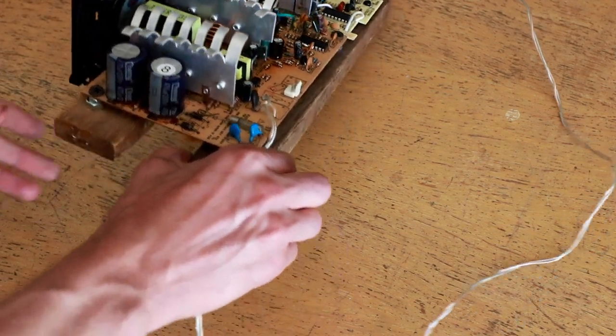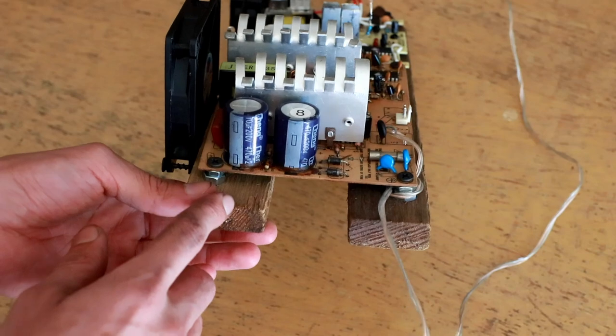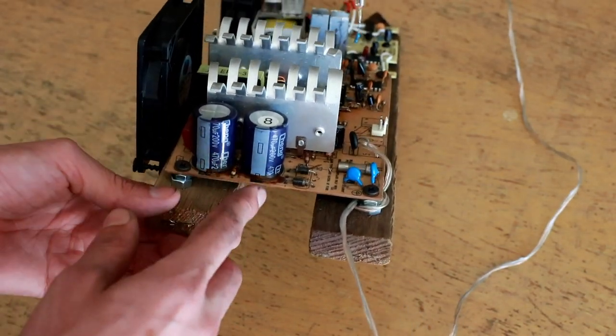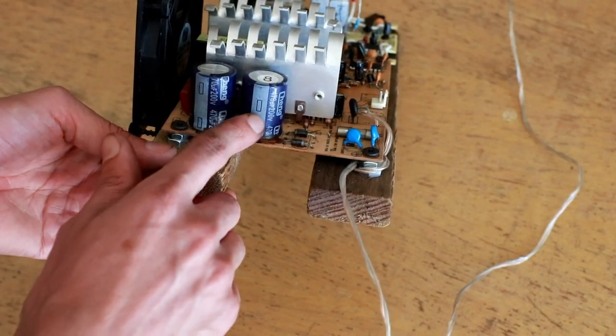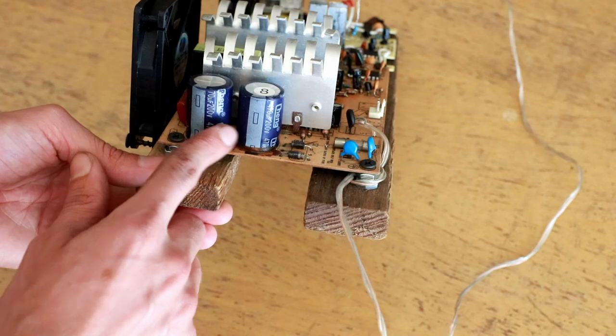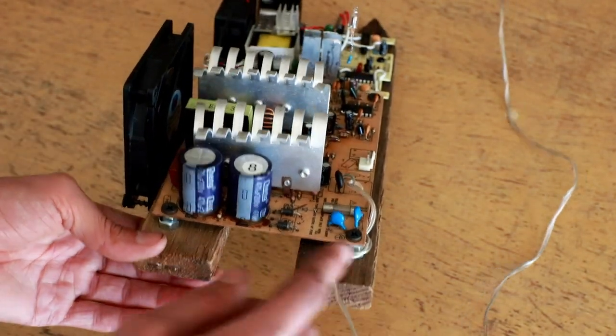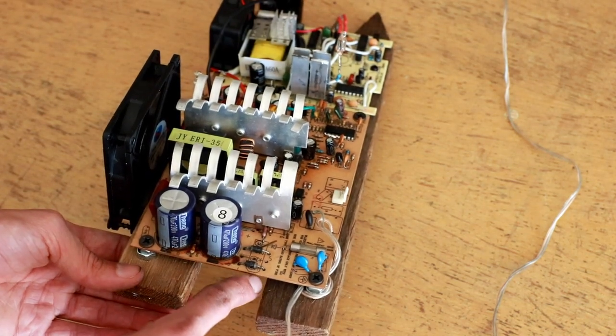So what I actually have done is I've taken advantage of a feature that the power supply had to begin with but was not being used, and that is that it was basically set up already to operate as a voltage doubler. These two capacitors, these 200-volt capacitors, were connected effectively in series with one another to provide a 400-volt tank capacitor for the 240-volt supply. That was connected via a standard four diode full bridge rectifier.